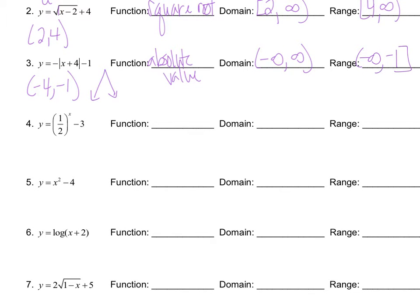In example four, this is an exponential function. Remember that if there's a variable in the exponent, it's exponential, and there are no restrictions on an exponential function's domain, so this is negative infinity to infinity. But the range has restrictions because of the asymptote — the line that our graph approaches but never touches. We have to look at the a value to see if it's positive or negative. This example is positive, so we start at negative three and go to positive infinity. With exponential and logarithmic functions, the value is an open bracket because it's a line we approach but never touch.